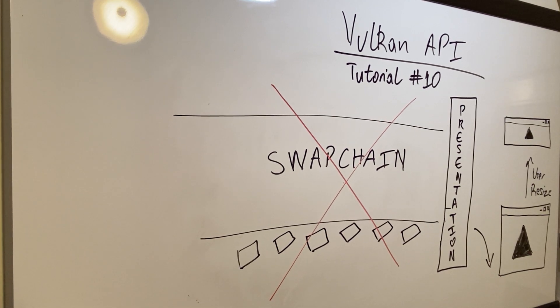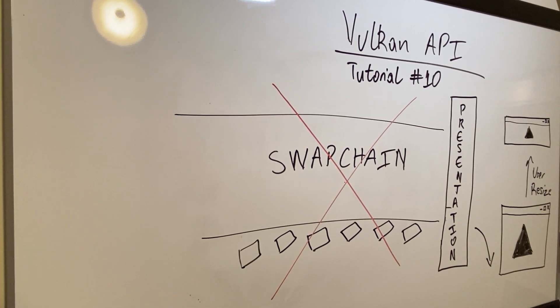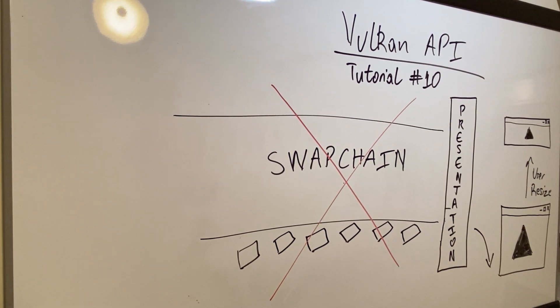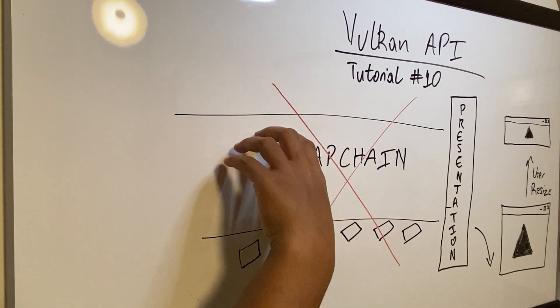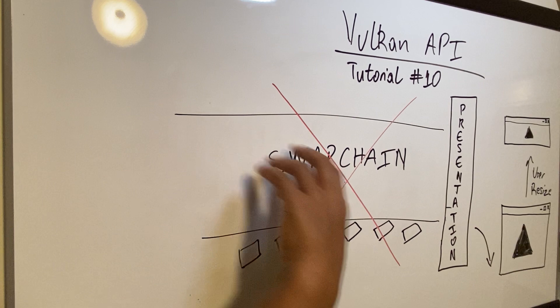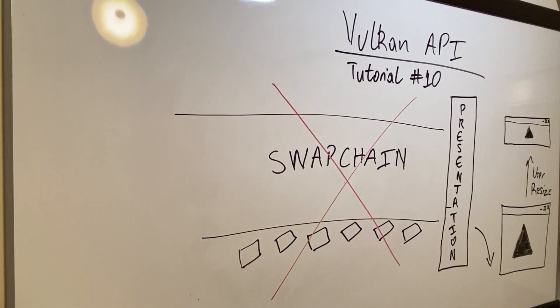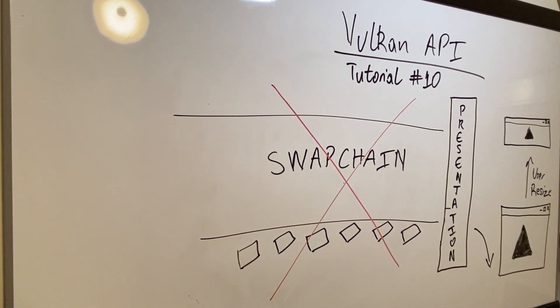I'll put a link in the description below and what it basically goes through is it discusses the code in Vulkan that you need in order to gracefully destroy the old swap chain, create a new swap chain, and get images that are appropriate for the window size.